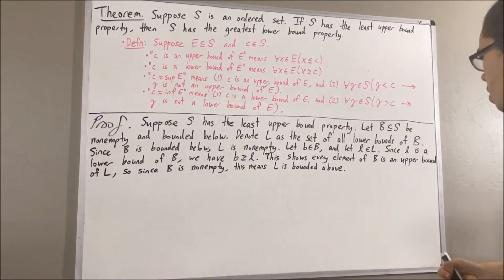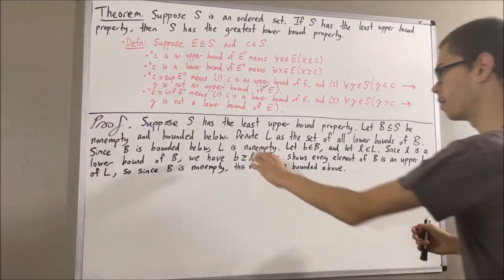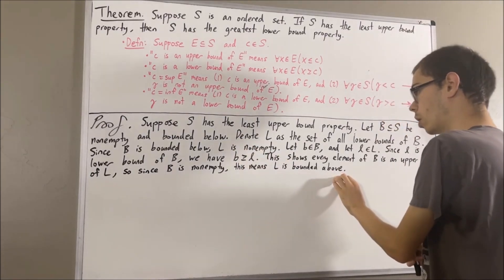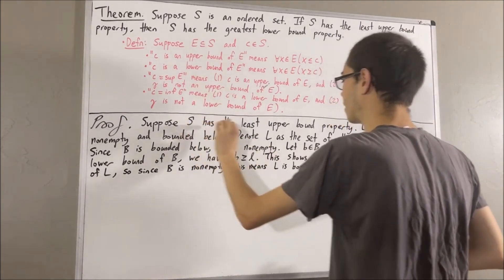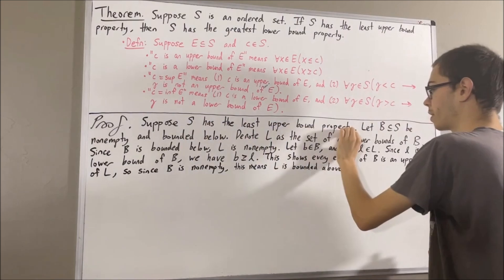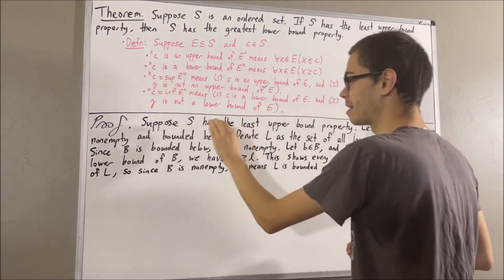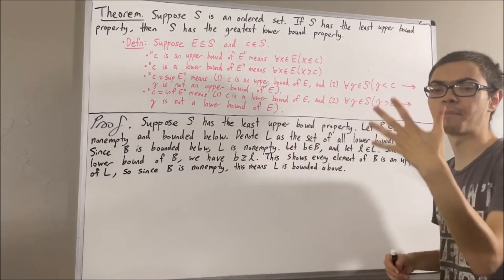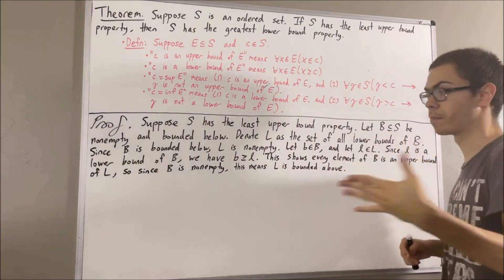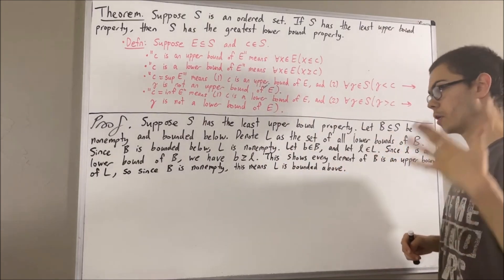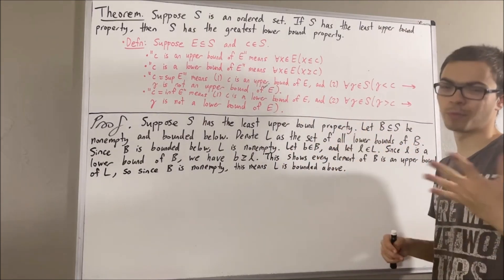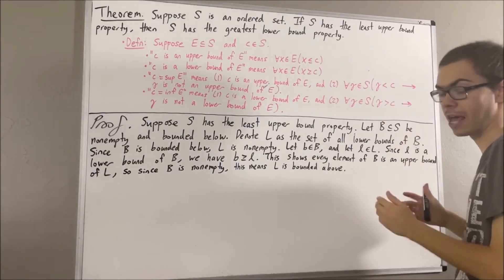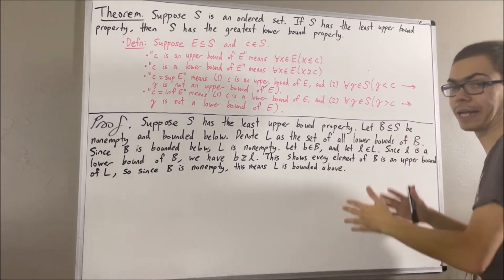So now that we've shown that L is non-empty and bounded above, the fact that S has the least upper bound property means that every subset of S which is non-empty and bounded above has a supremum. Therefore, L must have a supremum. And we'll denote the supremum of L by alpha.